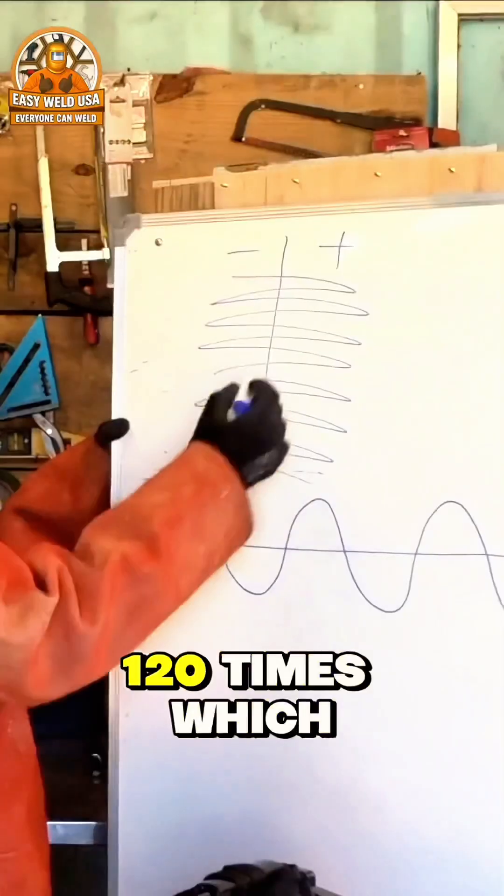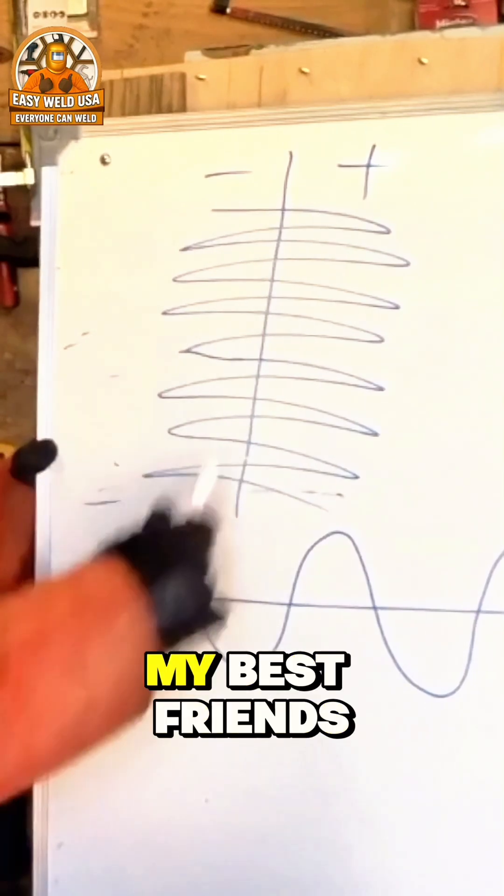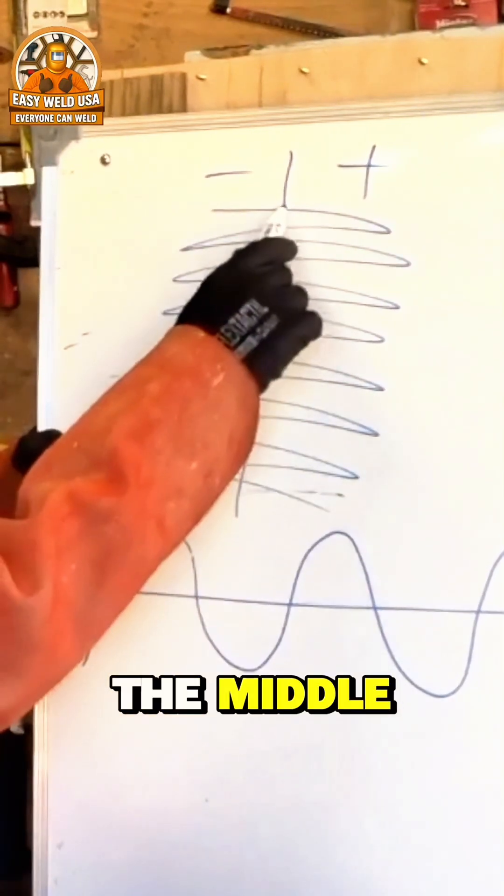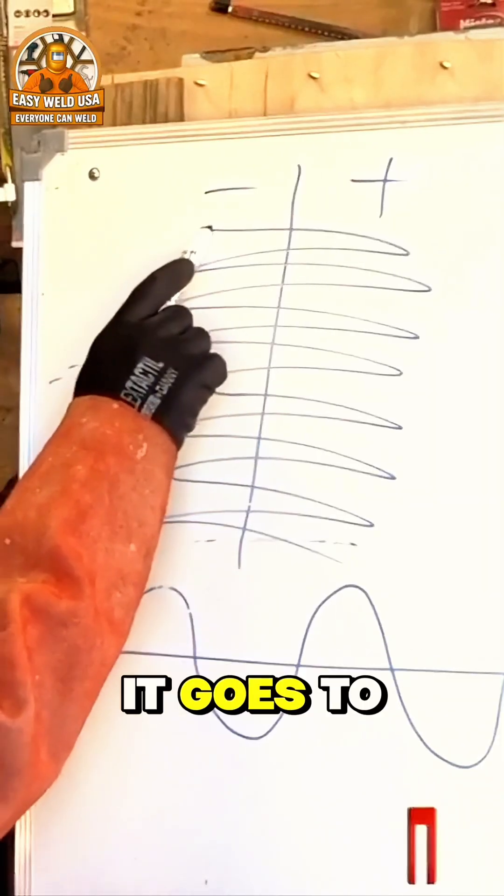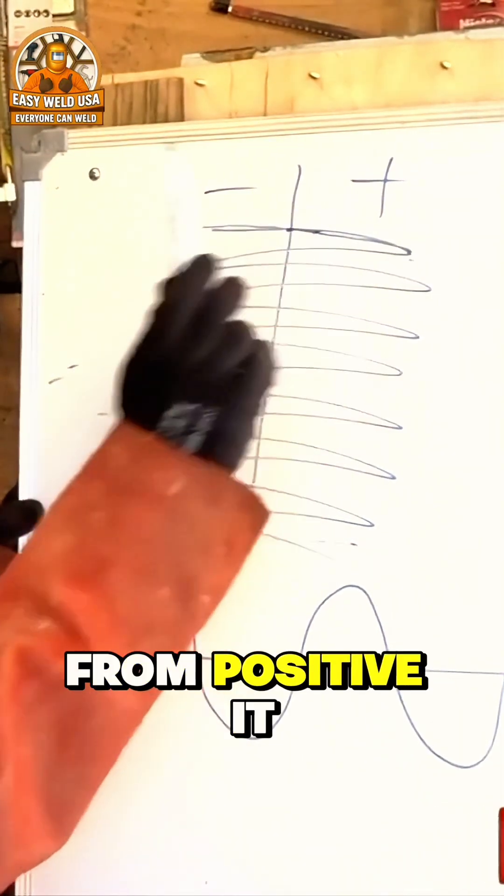If it switches 120 times, which part happens the most? Where does it mostly stay, my best friends? It's here in the middle, because from negative it goes to positive.